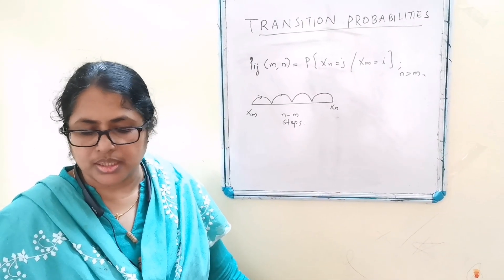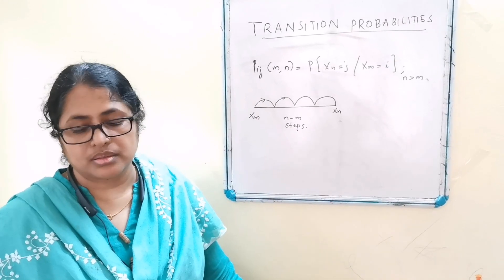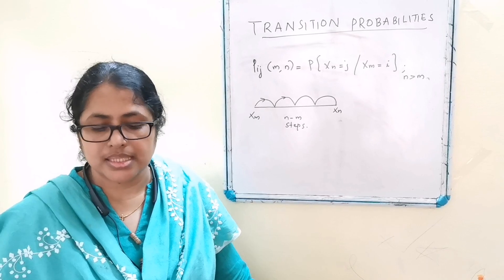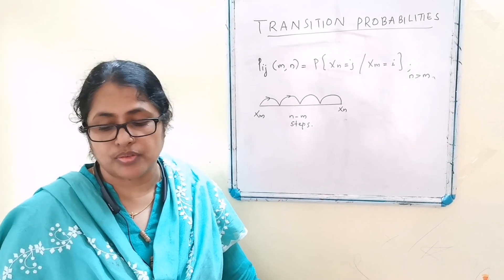It may be noted that the random walk or the gambler's ruin problem are the classical examples of Markov chain.